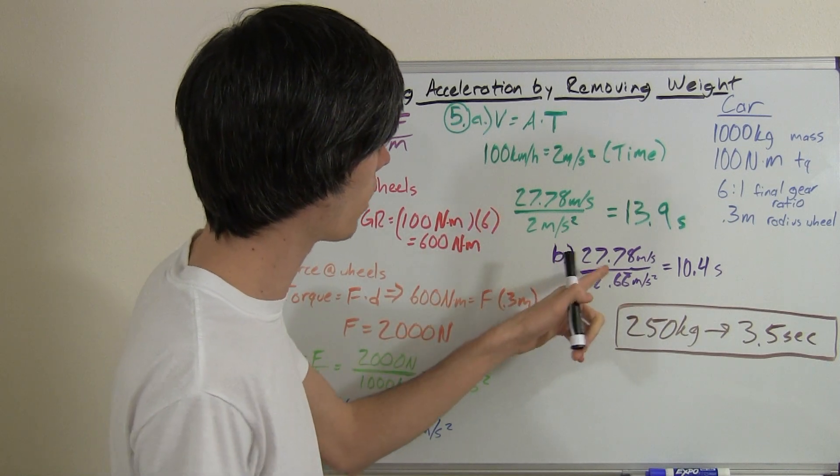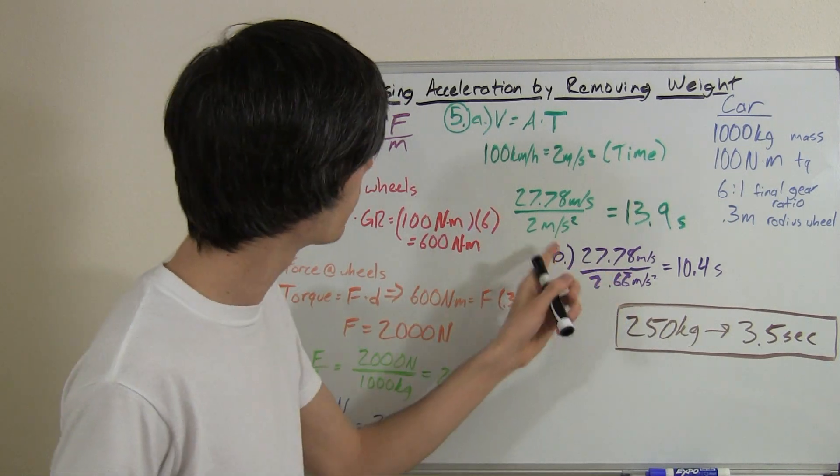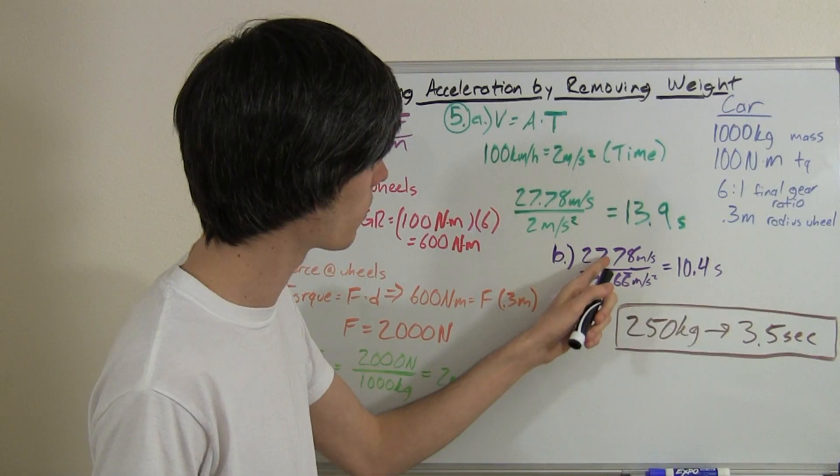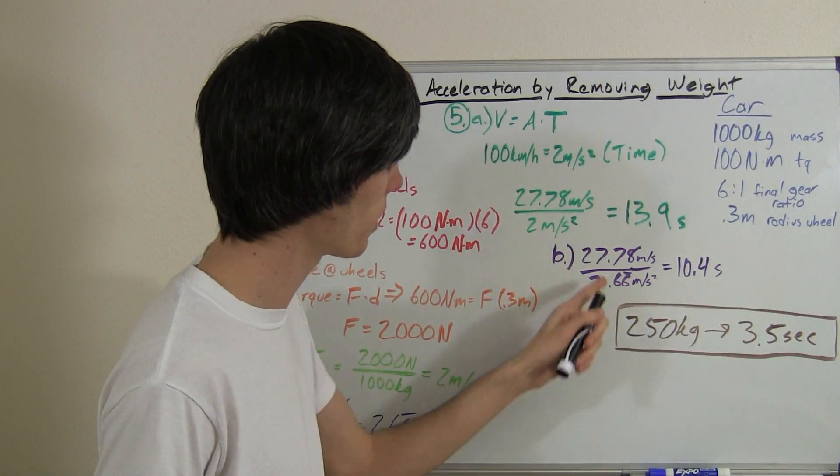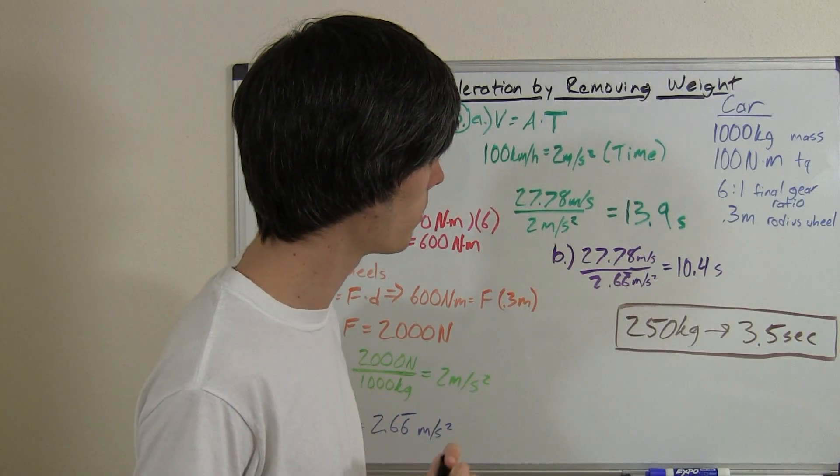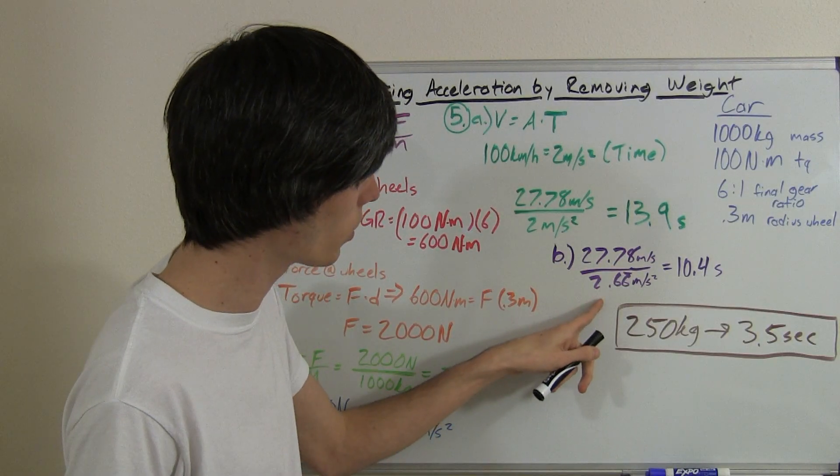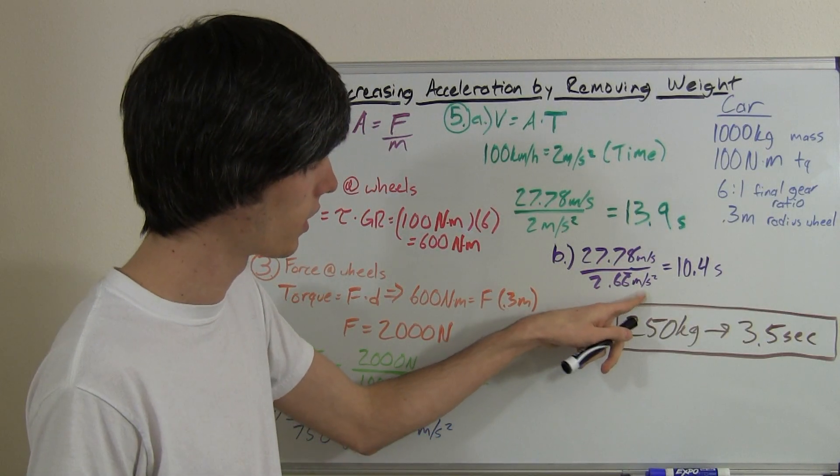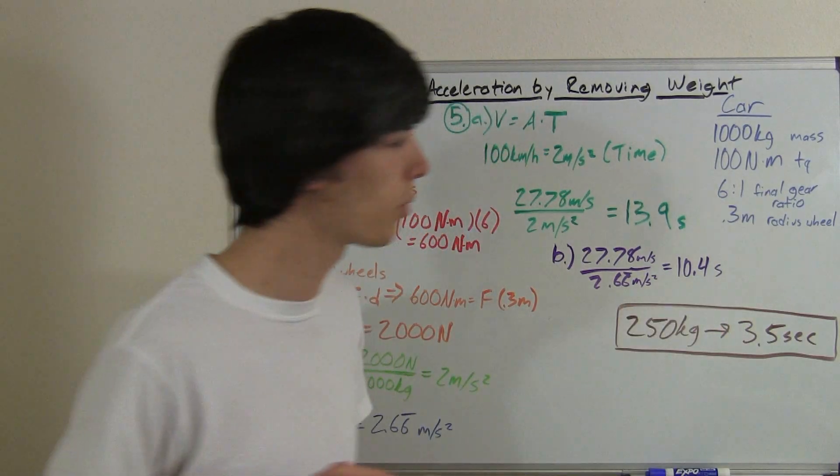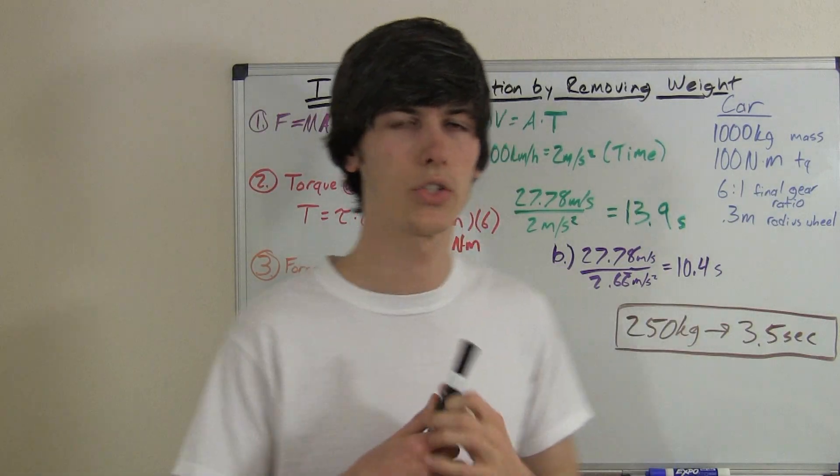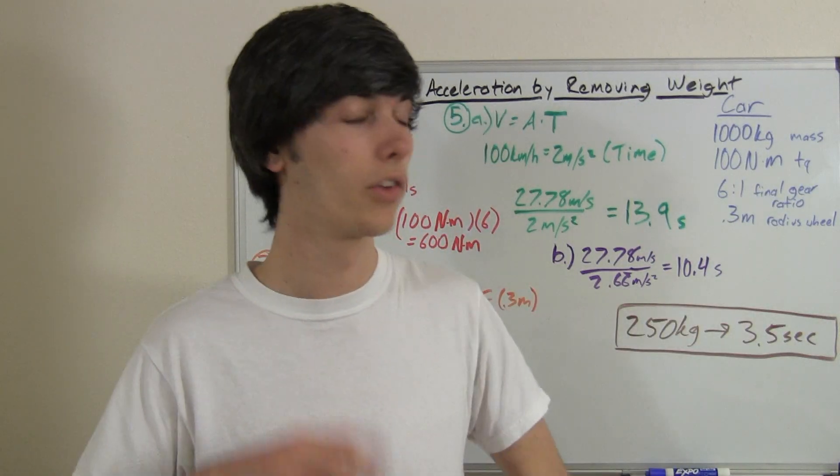So when we come here and we do our Part B again. So we've got our acceleration. We want to get to 100 kilometers per hour, 27.78 meters per second. So divide that by 2.66 just like we did before. And that gives us an acceleration time of 10.4 seconds to get to 100 kilometers per hour.